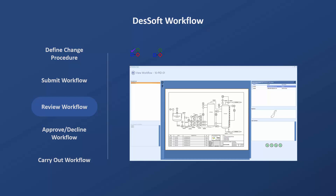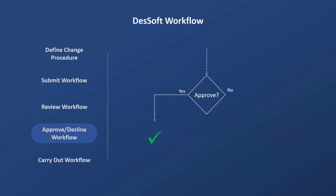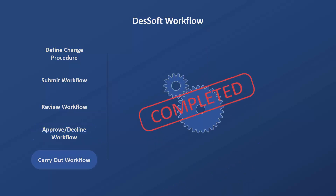Once all applicable persons have signed the workflow or change request, it can then be executed if it has been approved, or the workflow can be declined. After execution, the workflow can be finalized by changing the status to completed.